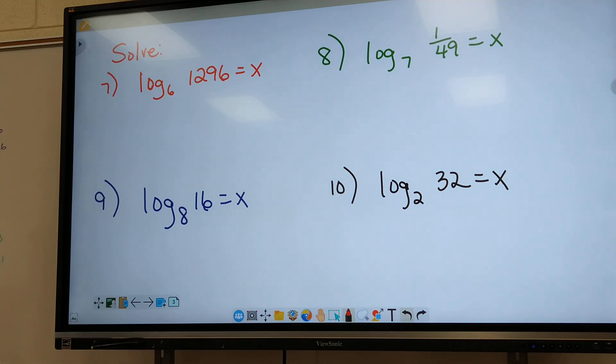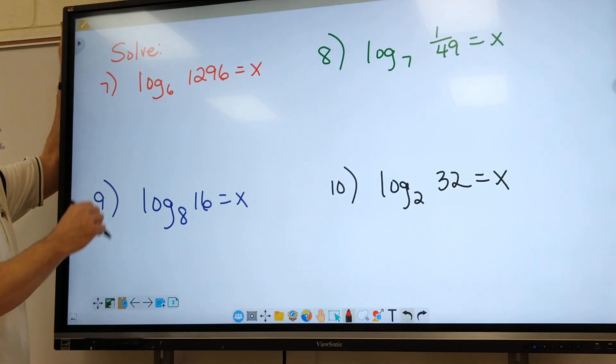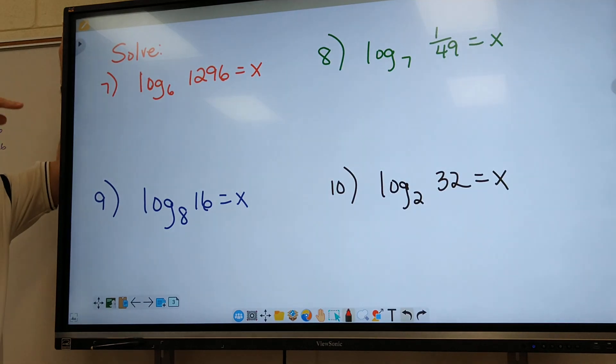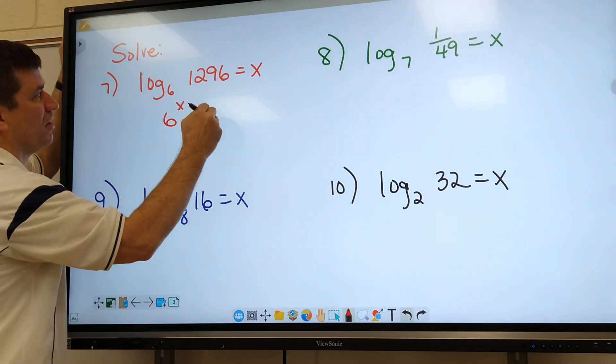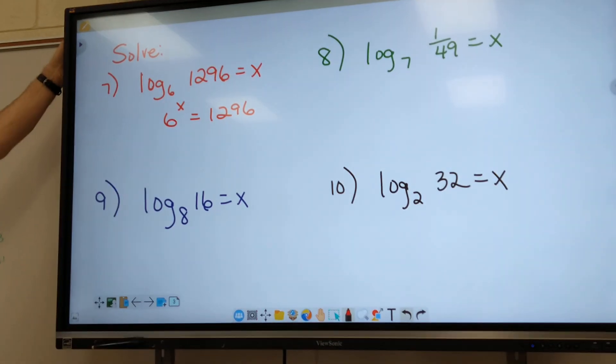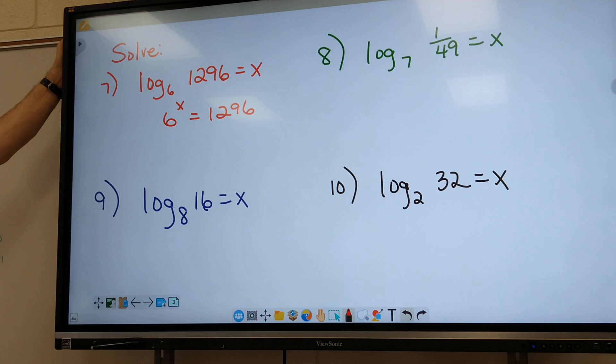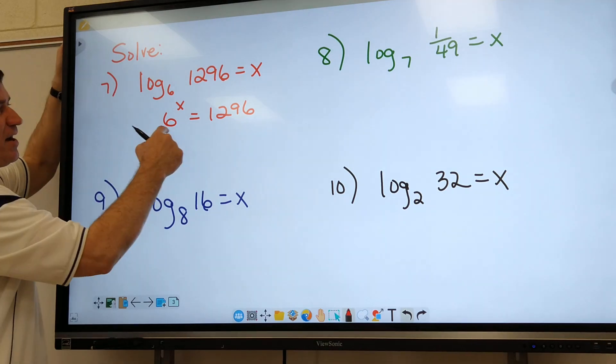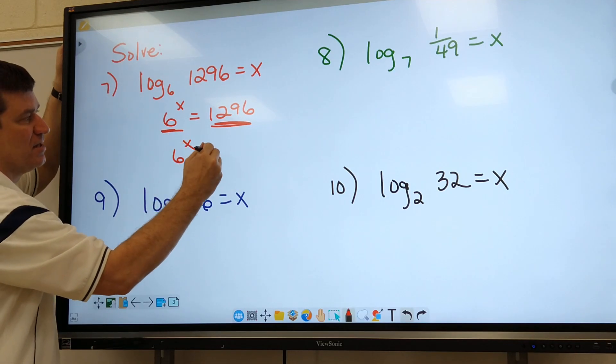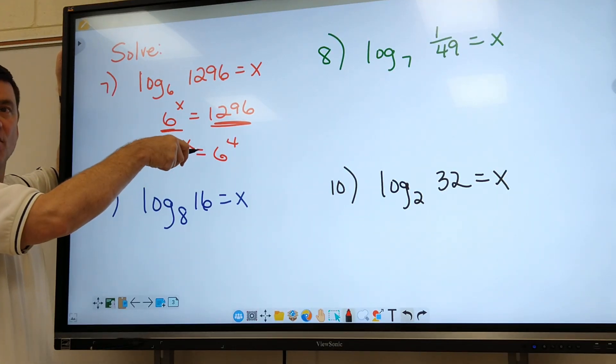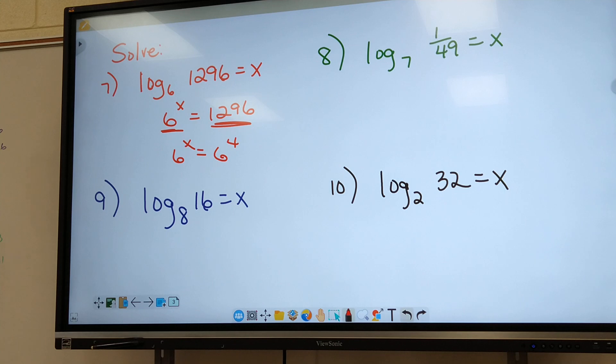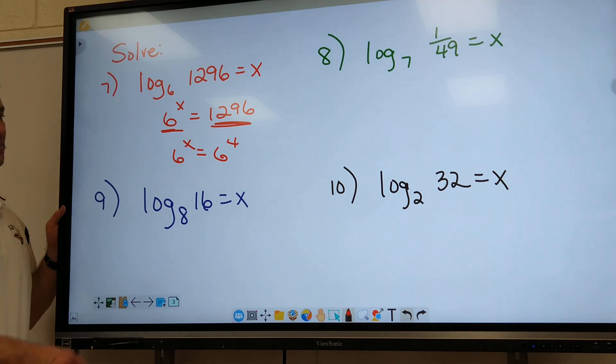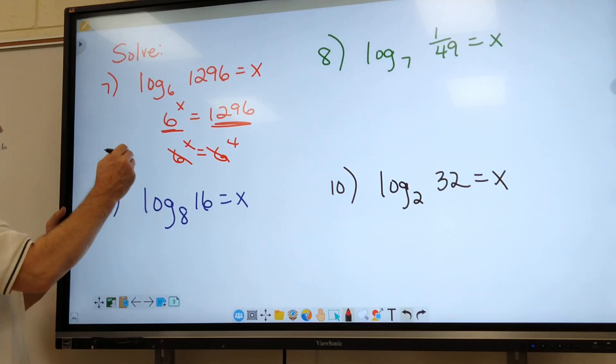All right, look at number seven. We'll do seven first. First step, you got to write this as an exponent problem just like we did on one, two, and three. So it'll be six to the x power equals 1296. Okay, now we did some work on this the other day. We've got to make this base the same as this base. So it'll be six to the x equals six to the fourth. Now how do I know that was six to the fourth? Well, you could use your calculator or you could look up here on the board. I've got a lot of exponents up here for you. It'll save you some time. All right, so what's the answer going to be on number seven? Mark out the sixes once you make them the same. The answer is x equals four.